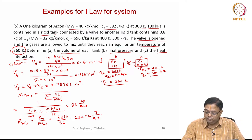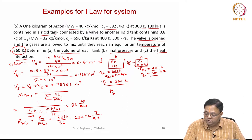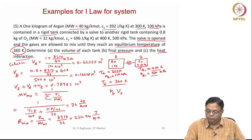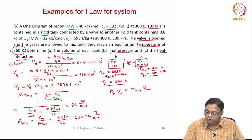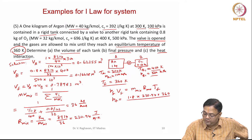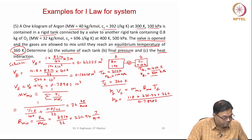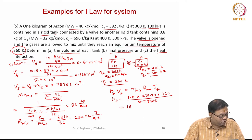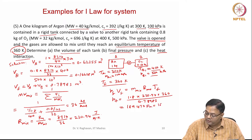Now we find the final pressure. PF × VF equals M_mix × R_mix × T_final. So PF equals 1.8 × 230.94 × 360 / 0.78983, which equals 189,470 Pascals, or 189.47 kilopascals.